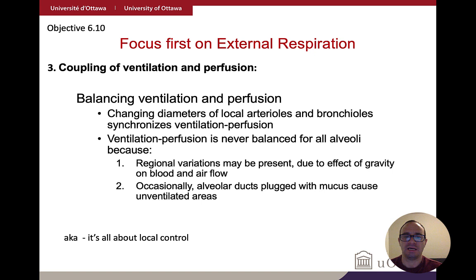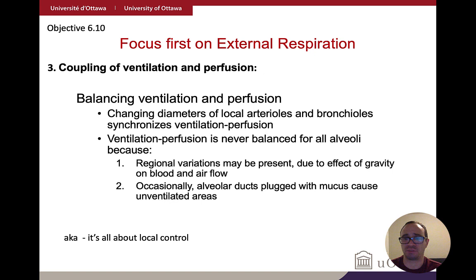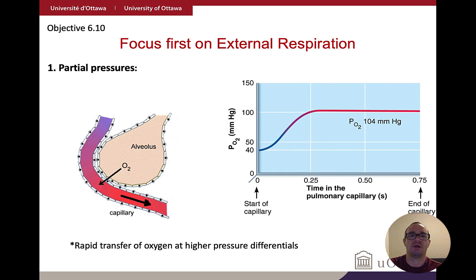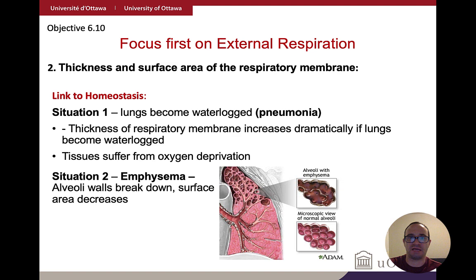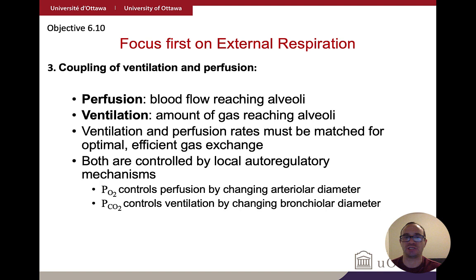Ventilation-perfusion coupling occurs on a very local level — not normalized across the entire lungs. Some alveoli are better coupled than others, and this doesn't influence what's happening on the other side of the lung. Regional variations can occur due to gravity affecting blood or airflow, plugged alveolar ducts with mucus, or areas broken down by disease.